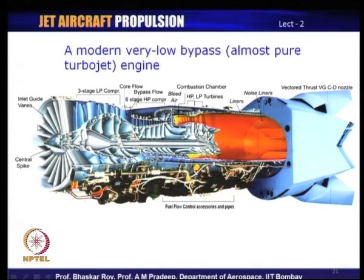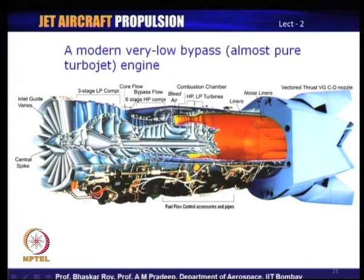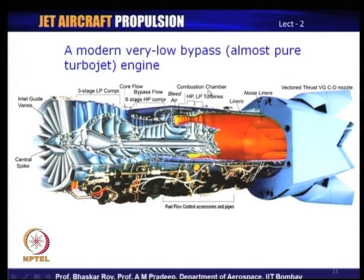There is also a very low bypass engine, which is almost a pure jet engine — a very small amount of air is bypassed, with most air going through compression, combustion chamber, and out as a hot jet. A very small bypass later mixes with the hot jet and goes out through a complex convergent-divergent nozzle system. This is a very modern low bypass, nearly pure jet engine used for military aircraft.